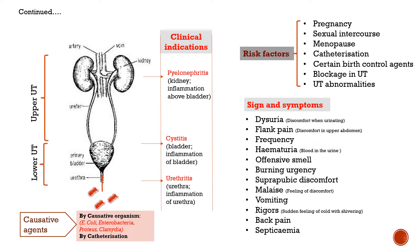Regarding signs and symptoms, the first is dysuria, that is discomfort while urinating, including itching sensation and burning sensation while urinating. Second is flank pain, that is pain in the upper abdominal region. Frequency and urgency to urinate is also a very important sign. Next is hematuria, that is blood in urine, and offensive smell of urine.